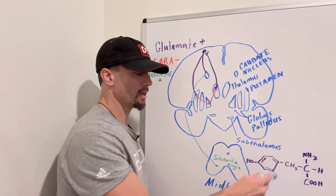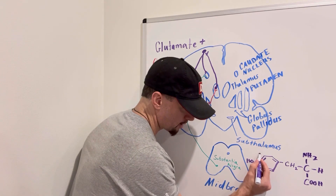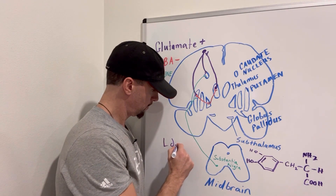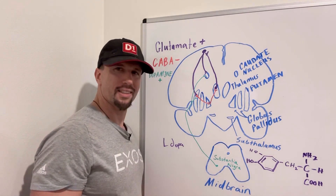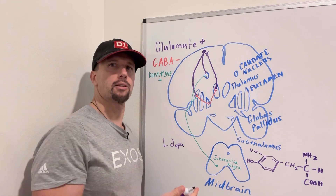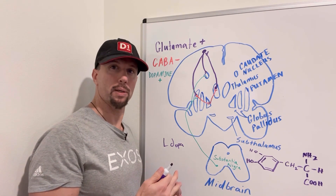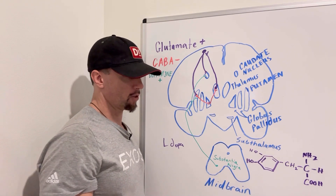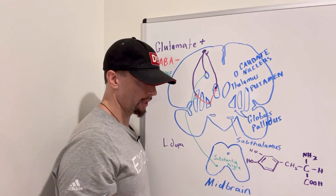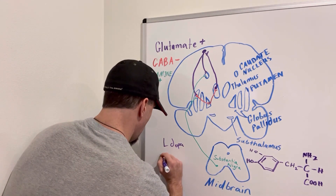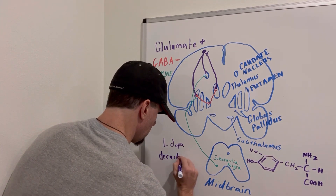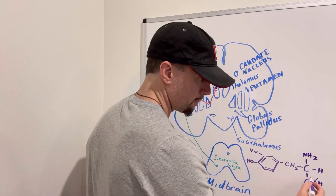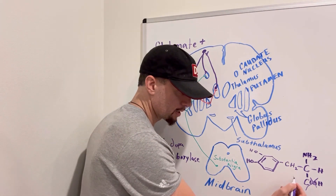Tyrosine hydroxylase acts on tyrosine to produce L-DOPA. There's a drug called Sinemet that contains L-DOPA along with carbidopa, which inhibits the peripheral conversion of L-DOPA to dopamine. Another enzyme, L-DOPA decarboxylase, takes L-DOPA to dopamine by removing the carboxyl group and replacing it with a hydrogen. The result is dopamine.